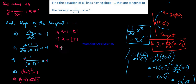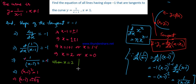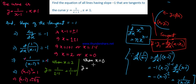From x minus 1 equals plus 1, we get x equals 2. From x minus 1 equals minus 1, we get x equals 0. When x equals 2, y equals 1 over (2 minus 1) equals 1, giving point (2, 1). When x equals 0, y equals 1 over (0 minus 1) equals minus 1, giving point (0, minus 1).